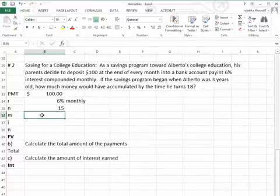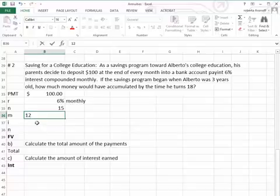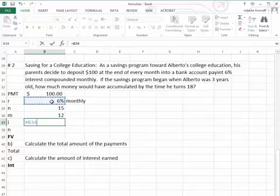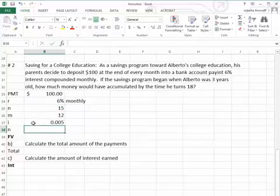Since the interest is compounded monthly, we're going to put that in as 12 times per year. The I is equal to the interest rate, which is 6%, divided by the number of payments per year, which is 12. So our periodic interest rate is 5,000 or 5 tenths of 1%.